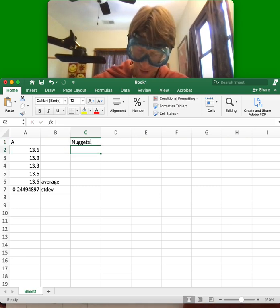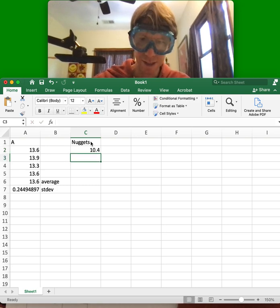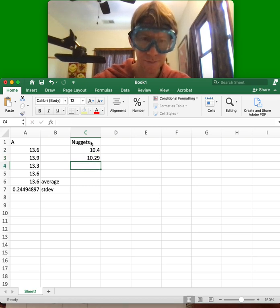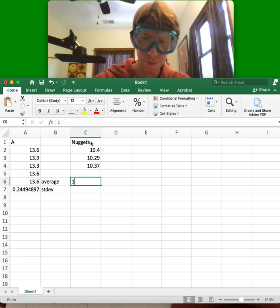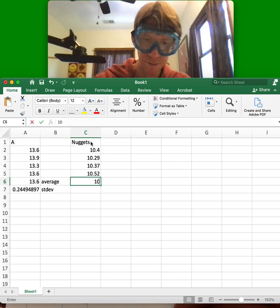And I'm going to have five values. 10.40—and the zero will disappear. Don't put units into Excel, please. 10.29, 10.37, 10.52, and one more time, 10.27.